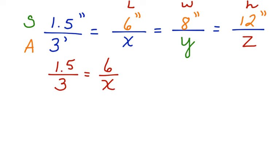To solve a proportion, we're going to cross multiply. We have 1.5X is equal to 18. Divide both sides by 1.5.